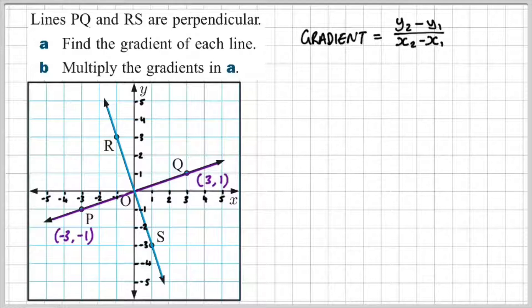In order to find the gradient, we'll use the gradient formula, which is y2 minus y1 divided by x2 minus x1.